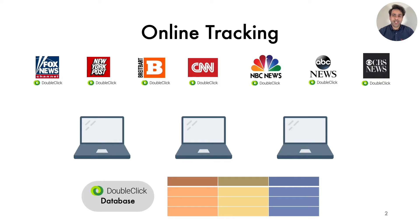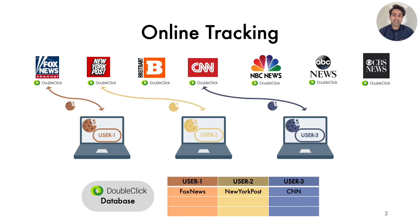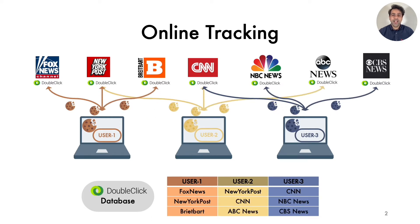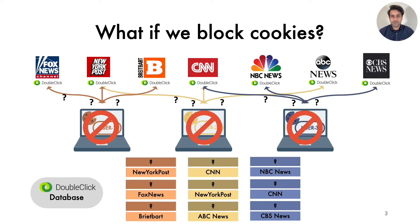Traditionally, trackers have relied on client-side storage mechanisms like cookies to track users across websites. At a fundamental level, trackers assign a unique cookie to each user and that cookie is reported as users visit different websites. But what would happen if users blocked or removed the cookies from their browsers? In that case, trackers would simply lose their ability to track users as they won't have any cookies to link users' browsing history.